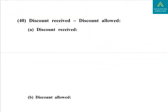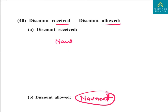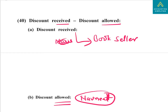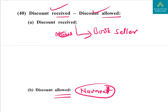Discount received and discount allowed: in our example, for Navneet company it is discount allowed — they are giving the discount. For the bookseller, it is discount received — they are receiving the discount.